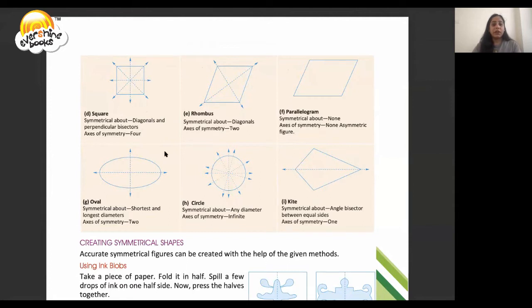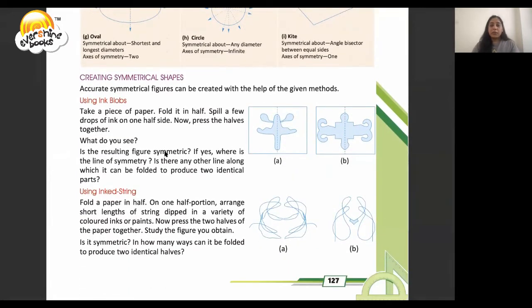If we have a paper, we put a dot of ink in place. Take a piece of paper, fold it into half, spill a few drops of ink on one half side. Now press the halves together. What do you see? Is the resulting figure symmetrical? If yes, where is the line of symmetry? Is there any other line along which it can be folded to produce two identical parts?